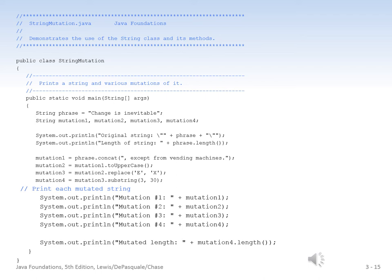We take mutation1 and call toUpper, assigning the new string to mutation2. Then mutation2 calls the replace method, replacing capital E with capital X, assigning that to mutation3. Then mutation3 calls substring(3, 30), extracting characters from index 3 to 30 and assigning to mutation4. Then we print all of them with string literals identifying each. On the next slide I have a screen capture from the IDE running this program, and I'll also place a zipped copy of this project in Canvas.